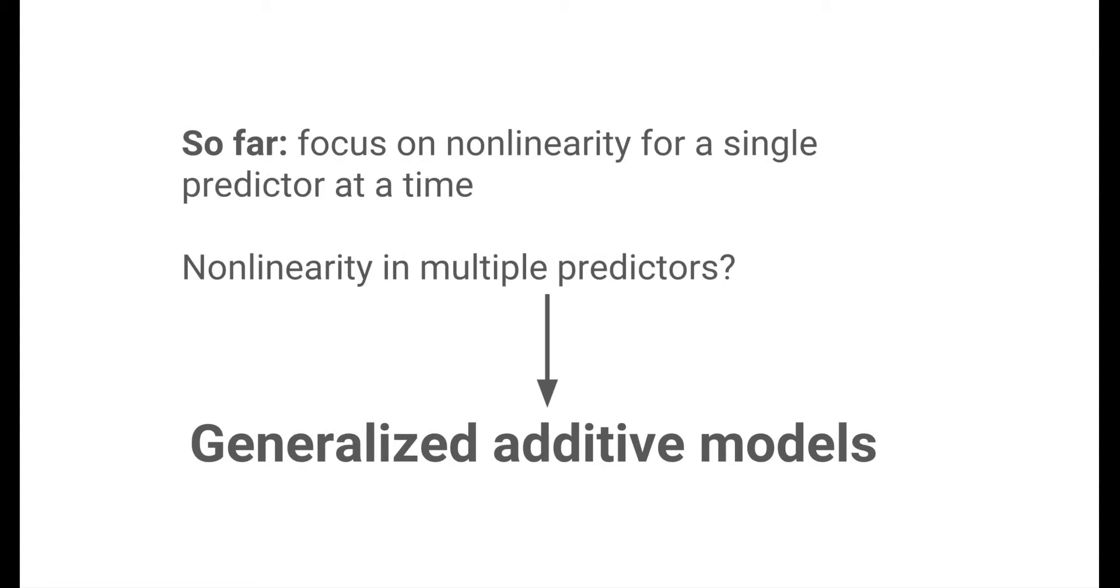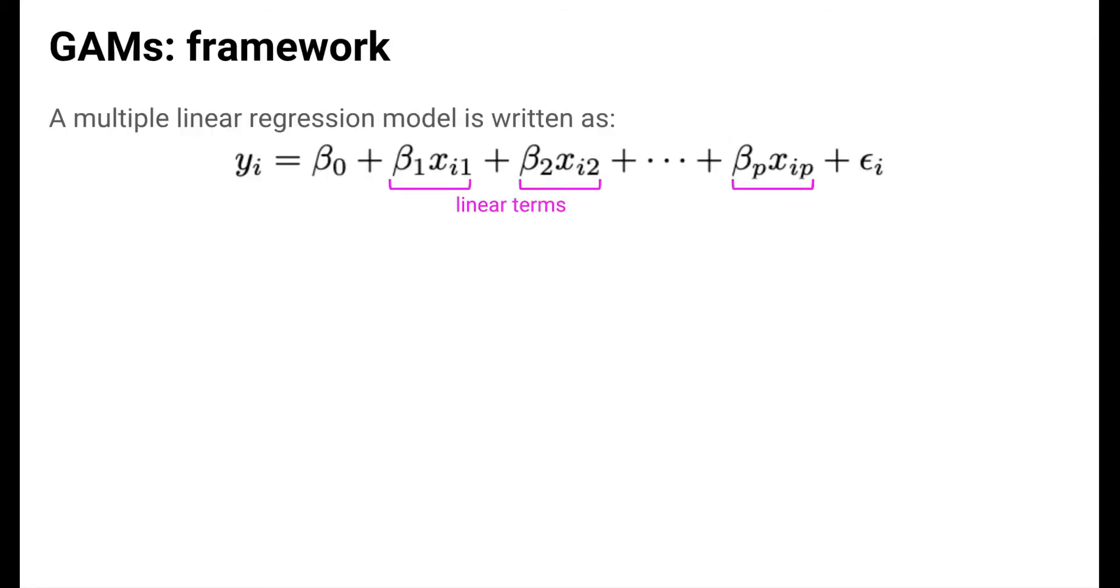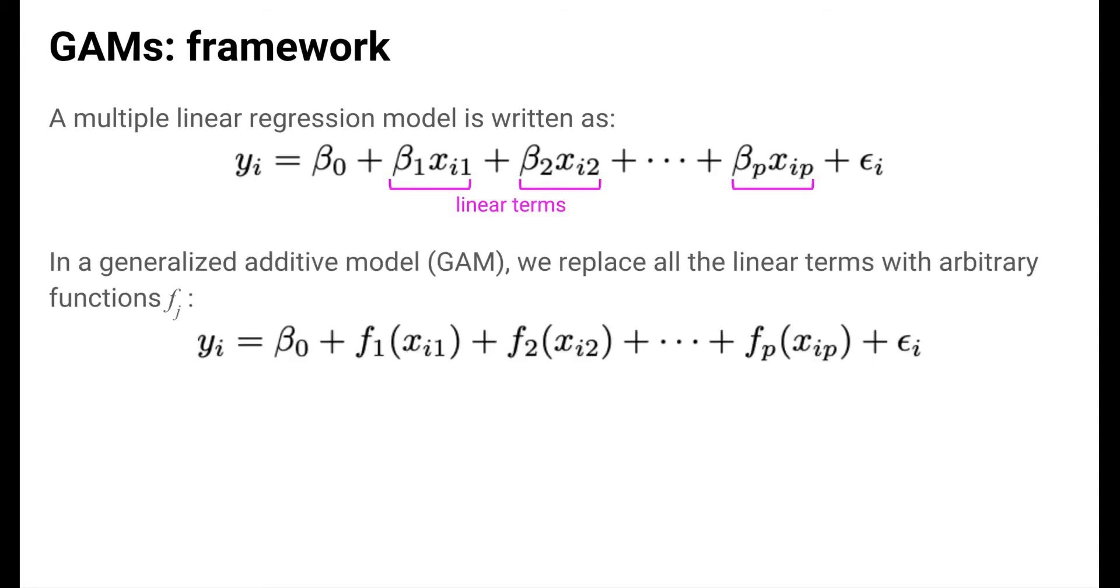So far, we have mostly focused on using nonlinear techniques for modeling nonlinearity in one predictor at a time. Oftentimes, we want to be able to model nonlinearity in potentially several predictors. Generalized additive models allow us to do just that. The framework for how a generalized additive model, or GAM, is written follows directly from how a multiple linear regression model is written. A multiple linear regression model is expressed as a sum of linear terms for each predictor. A GAM is expressed as a sum of arbitrary functions of each predictor.